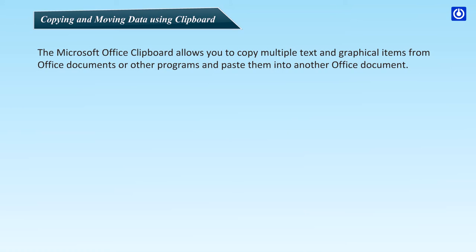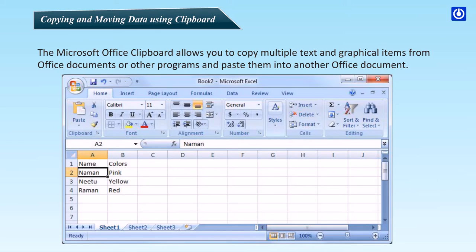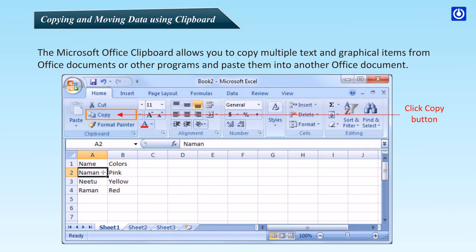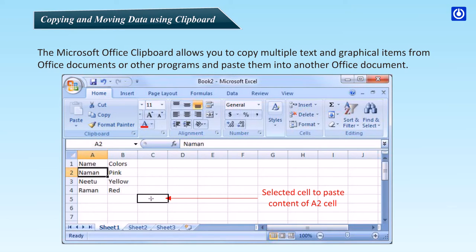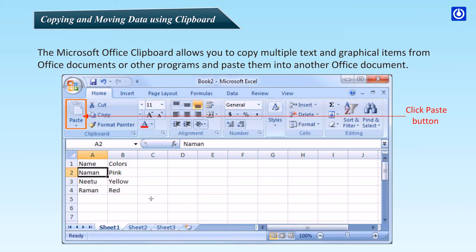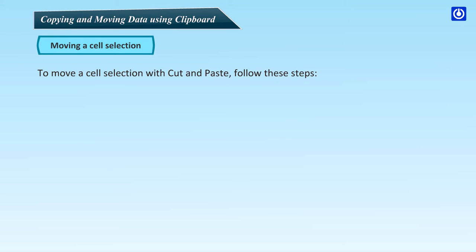Copying and moving data using Clipboard: the Microsoft Office Clipboard allows you to copy multiple text and graphical items from Office documents or other programs and paste them into another Office document. Open the file you want to copy from. Select the first item to copy. On the Home tab in the Clipboard group, click Copy, or press Ctrl+C. Click where you want items pasted. To paste items one at a time, click Paste from the Clipboard group.